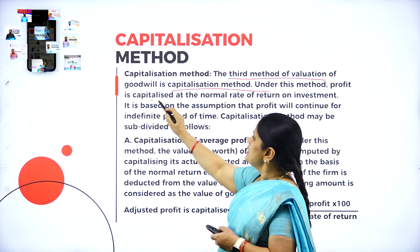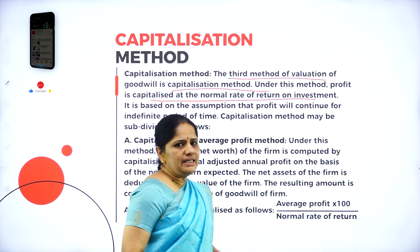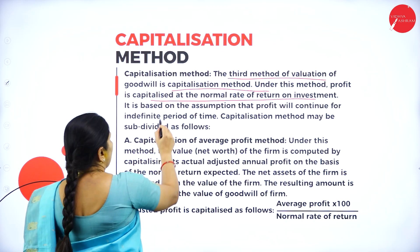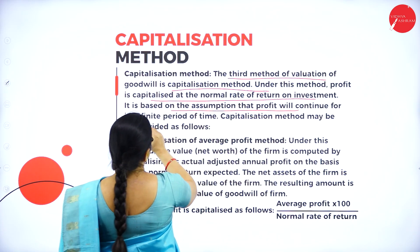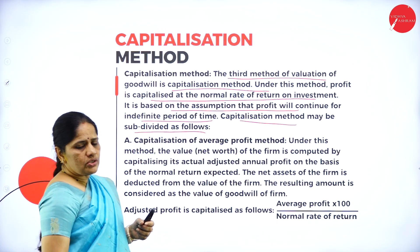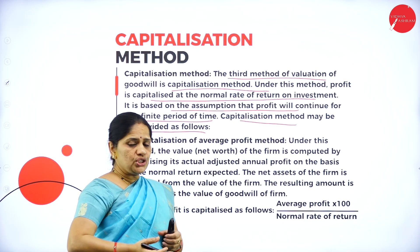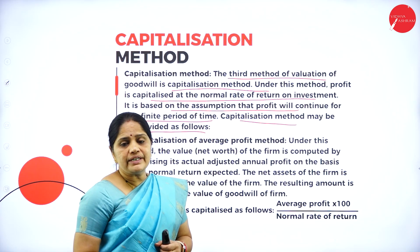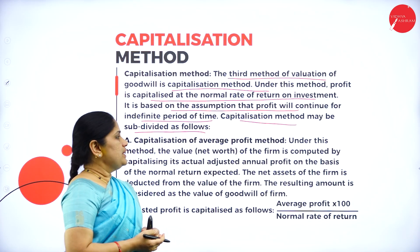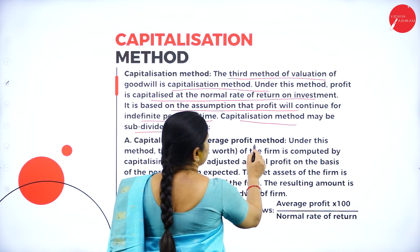Under this method, the profit is capitalized at the normal rate of return on investment, also called NRR. It is based on the assumption that profit will continue for an indefinite period of time. Capitalization may be subdivided as follows. The normal rate of return is the normal rate of profit that the company will earn in the future years, and we capitalize the profits based on the NRR.